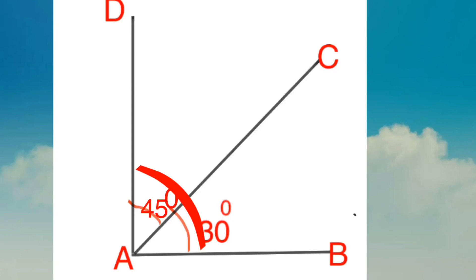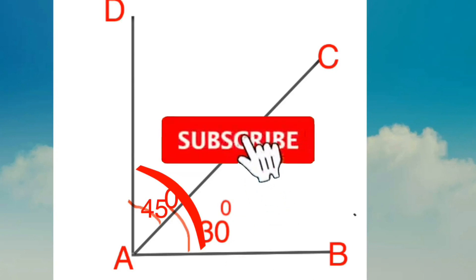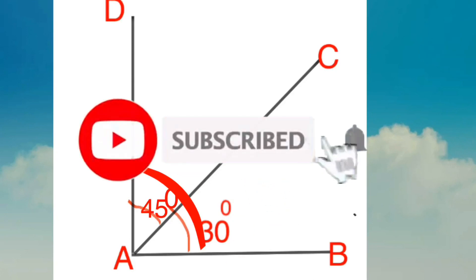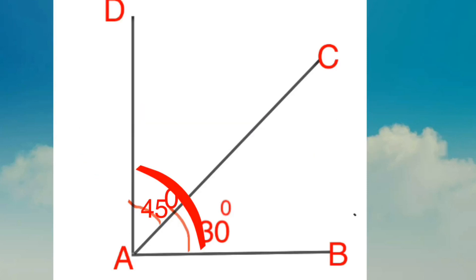What is the measurement of angle DAB? Angle DAB is the measurement — that is 45 degrees plus 30 degrees. Then it becomes 75 degrees. Okay? 75 degrees.